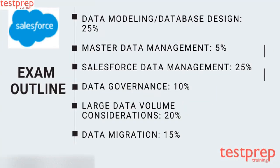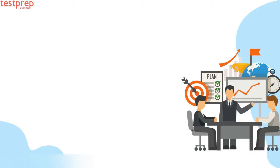Exam outline: first, data modeling or database design, which comprises 55% weightage. Data migration comprises 15% weightage for this exam. Let us now discuss about exam outline topics in detail.